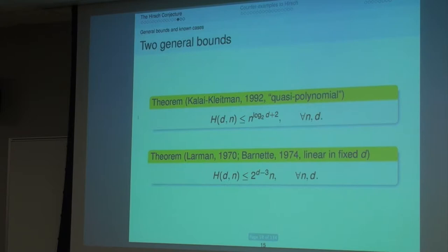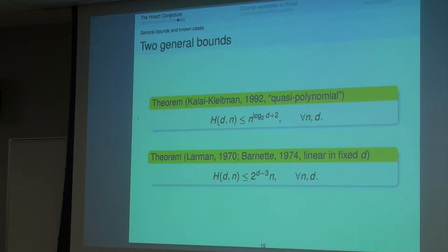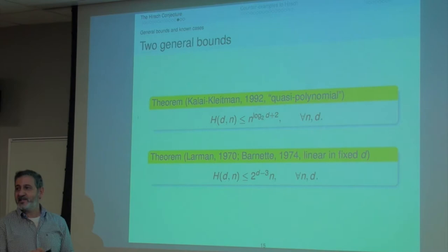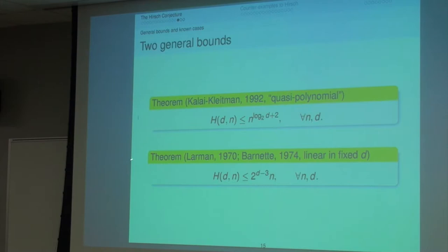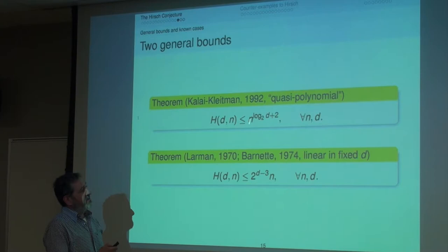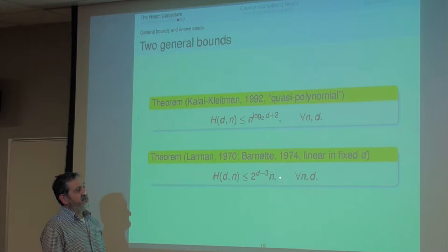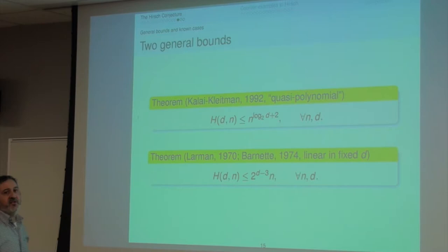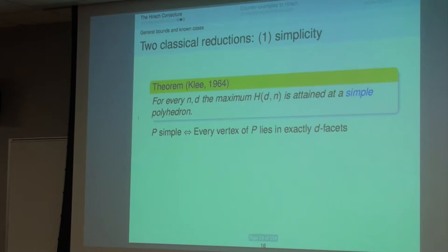What do we know? We know two bounds. The first, proven in 1992 by Kalai and Kleitman, is quasi-polynomial: n to the logarithm of d. If you agree that the logarithm of a number is a quasi-constant, then it's quasi-polynomial. The second bound is exponential in the dimension but linear in the number of facets — so in fixed dimension it's a linear bound, but exponential if you let the dimension grow.